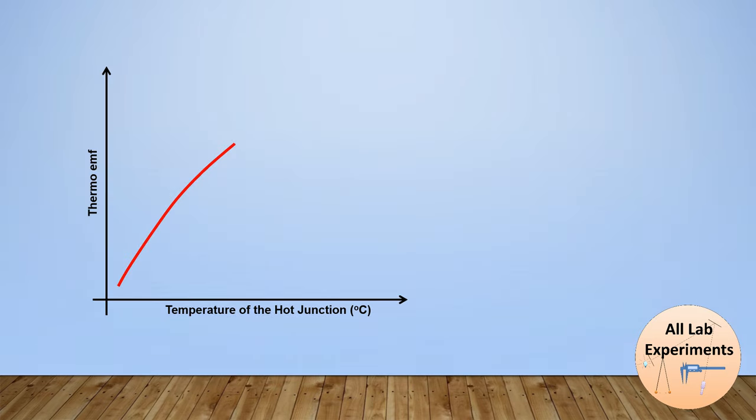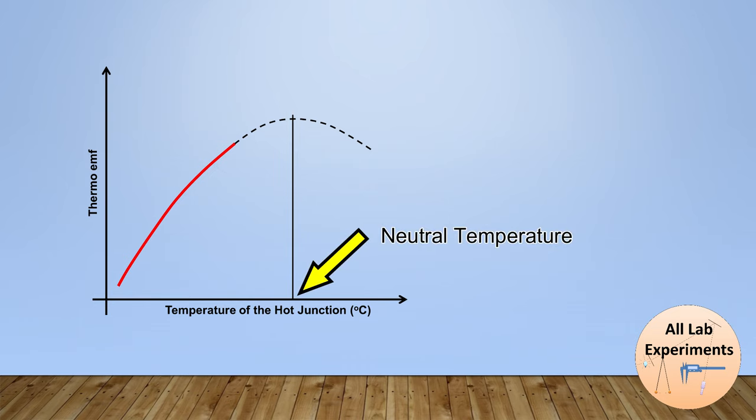But if we can go even higher temperatures, then we will observe a curve like this. Here the point at which thermo EMF is maximum is your neutral point, and it is going to make a parabolic structure. So in this way the calibration curve of a thermocouple can be obtained using a potentiometer.